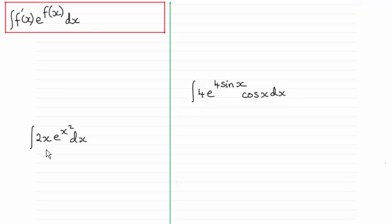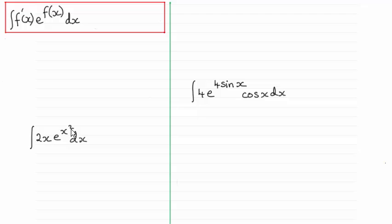You can see this in this first example because we've got e to the power x squared. x squared is our function of x and if we differentiate it with respect to x we would get 2x, and you can see you've got 2x multiplied with the exponential function e to the power x squared.